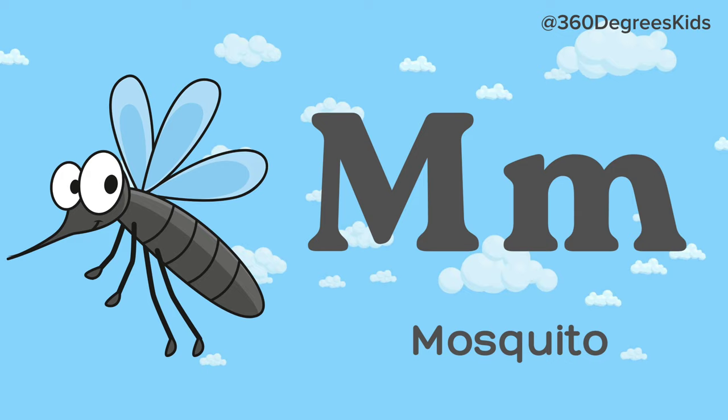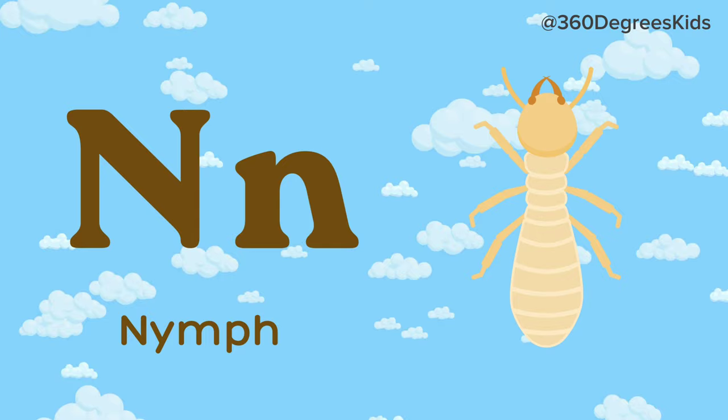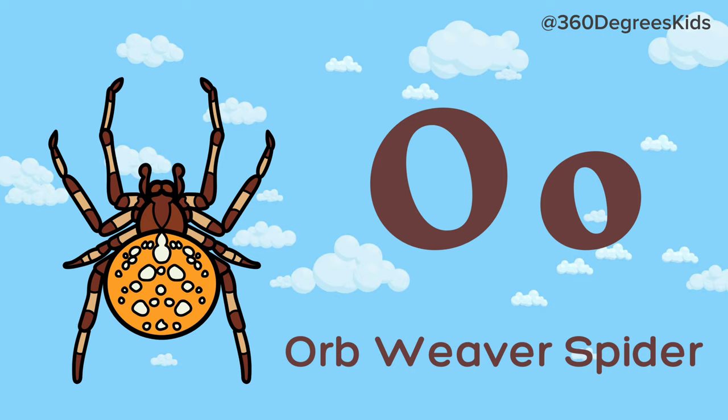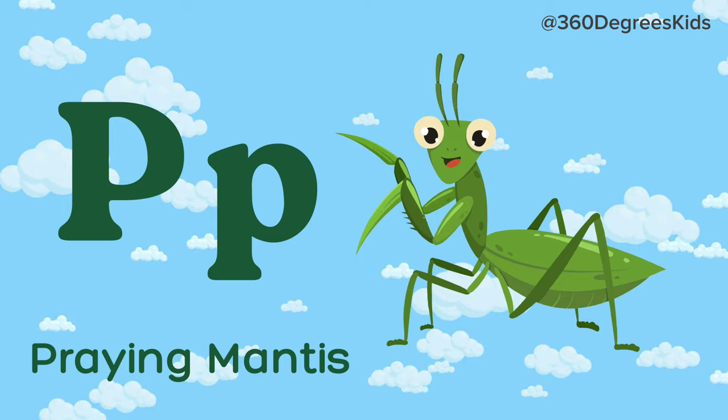M. M for Mosquito. N. N for Nymph. O. O for Orb Weaver Spider. P. P for Praying Mantis.